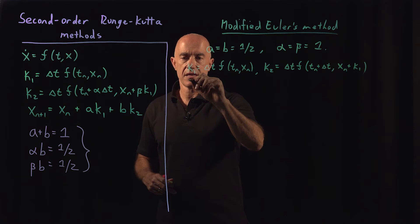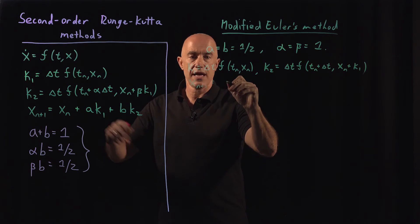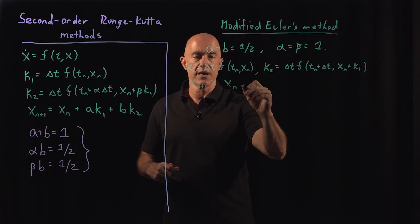And then finally, x_{n+1} then is equal to x_n and a and b are 1/2, so plus 1/2(k1 plus k2).